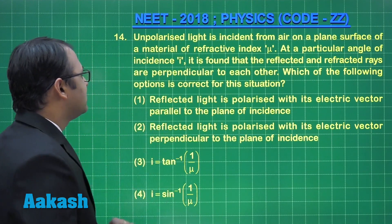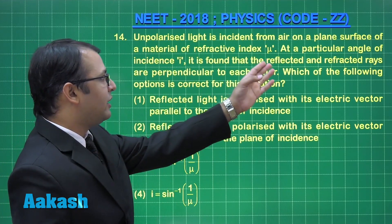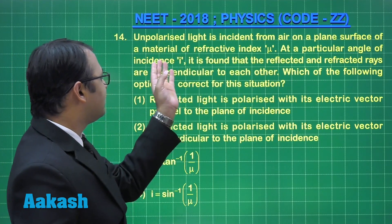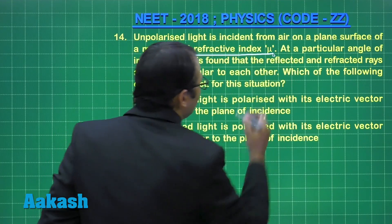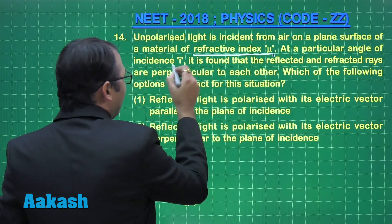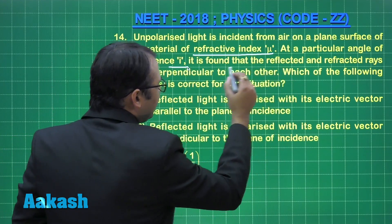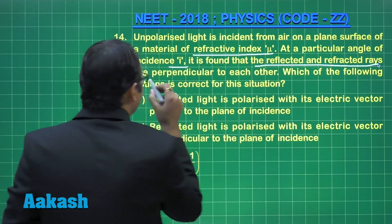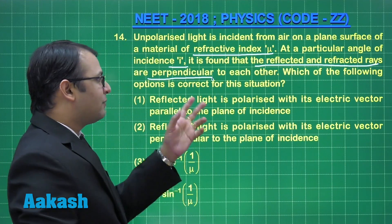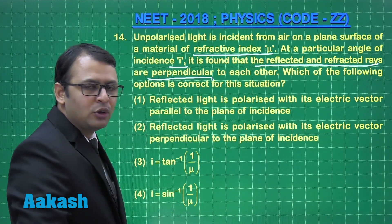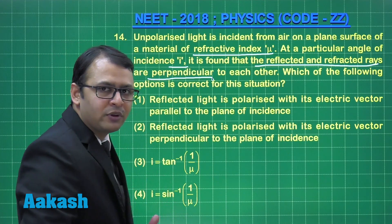Let's start question number 14. The question says unpolarized light is incident from air on a plain surface of material of refractive index mu, at a particular angle of incidence I, and it is found that the reflected and refracted rays are perpendicular to each other — meaning they are polarized. Which of the following conditions is correct?